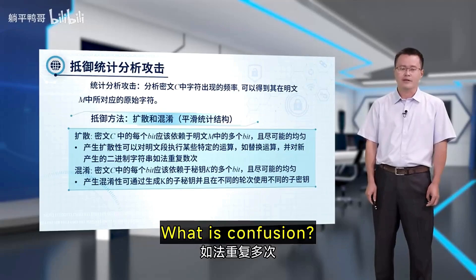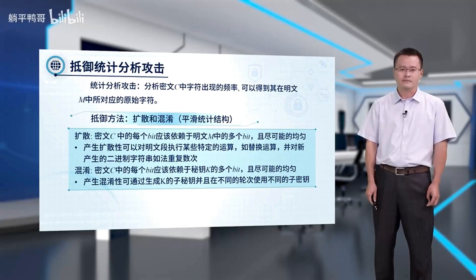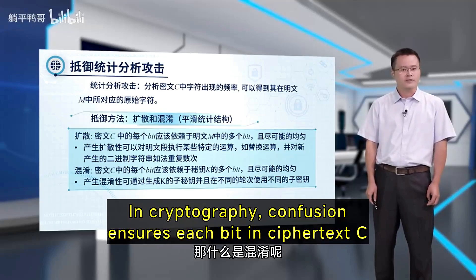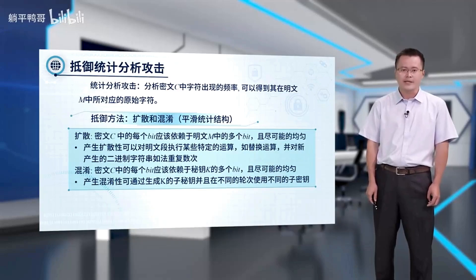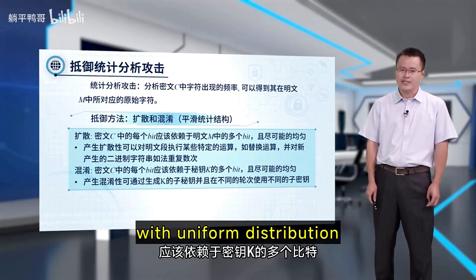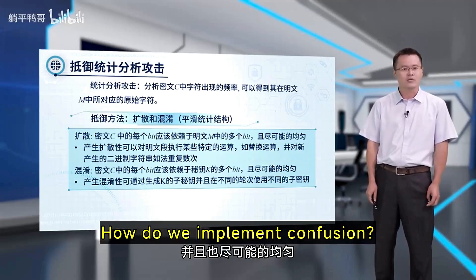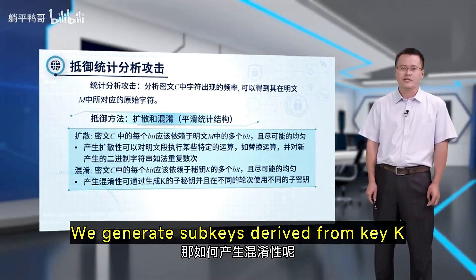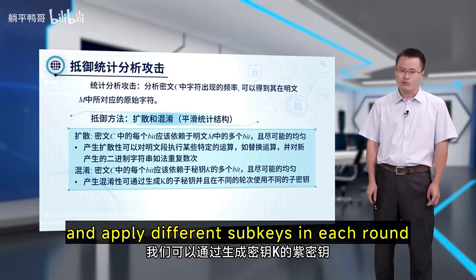What is confusion? In cryptography, confusion ensures each bit in ciphertext C depends on multiple bits of the key K with uniform distribution. To implement confusion, we generate subkeys derived from key K and apply different subkeys in each round.